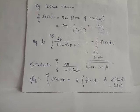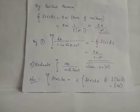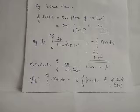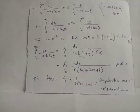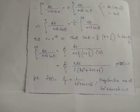Since we have the relation ∫₀^{2a} f(x) dx = 2·∫₀^a f(x) dx whenever f(2a − x) = f(x), and since cos θ = cos(2π − θ), we have ∫₀^{2π} dθ/(a + b·cosθ) = 2·∫₀^π dθ/(a + b·cosθ).